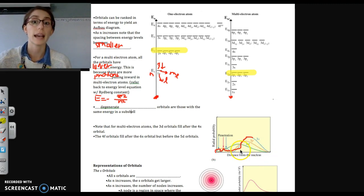So that's going to fill first. If we could draw the 4S subshell on here, we would see that it actually has a very small region of penetration that's even closer than the 3D. So that's why 4S fills first.